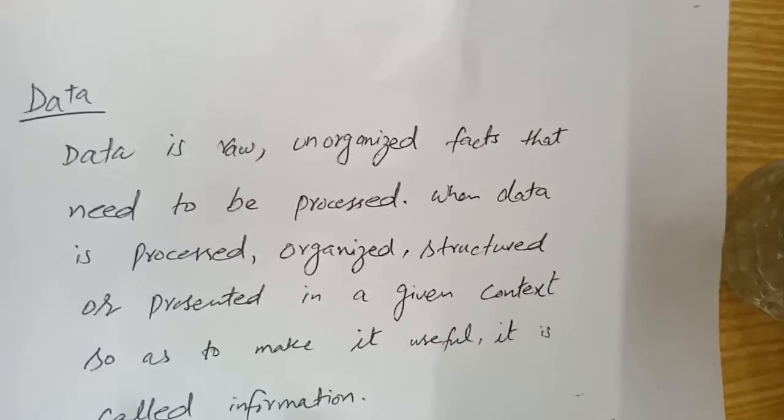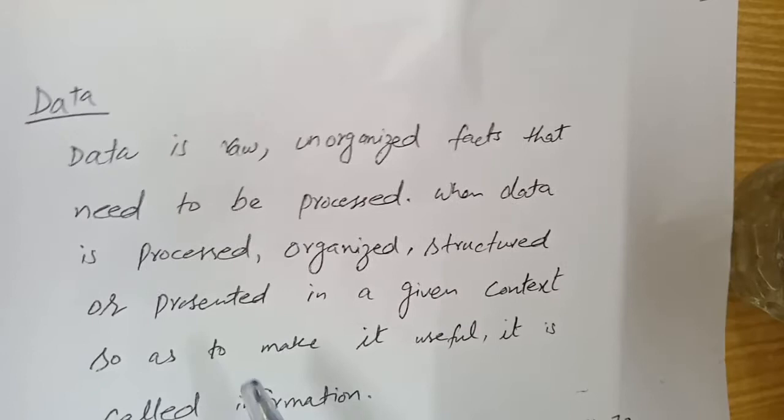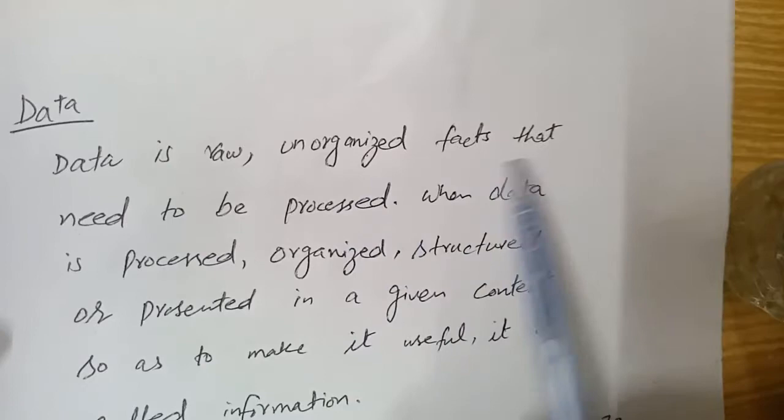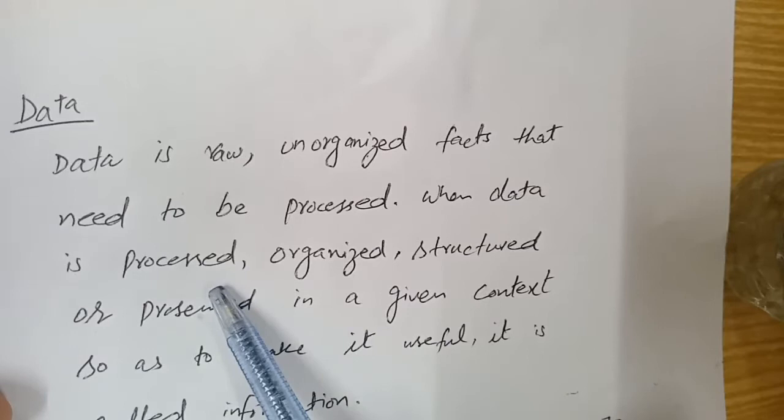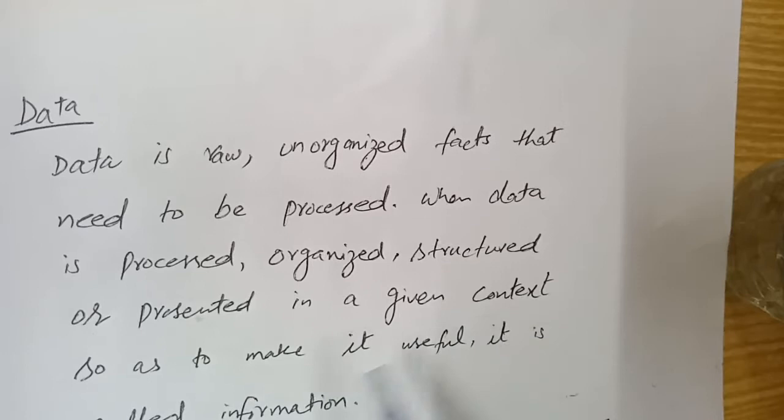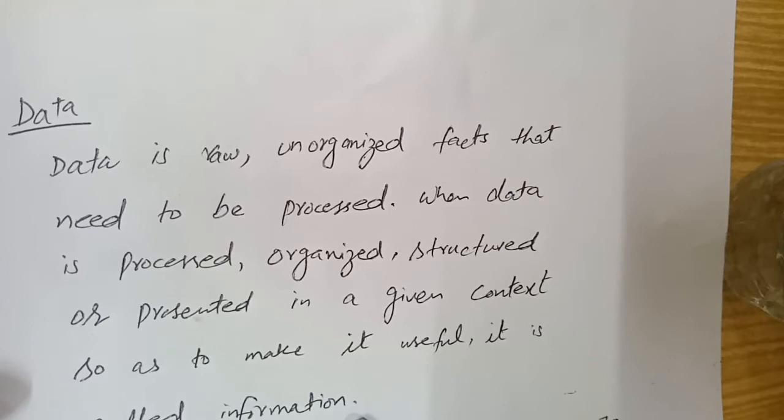First of all, we start from the definition of data — what is data. Data is raw, ungrouped facts that need to be processed. When data is processed, organized, structured, or presented in a given context so as to make it useful, it is called information.